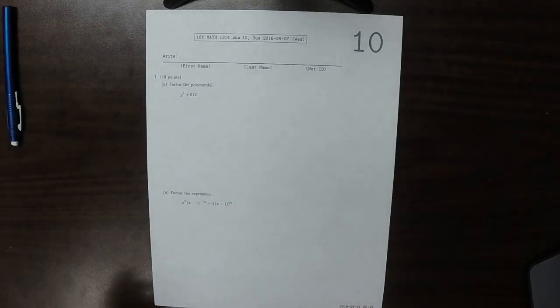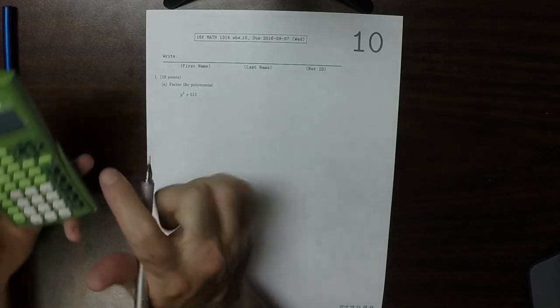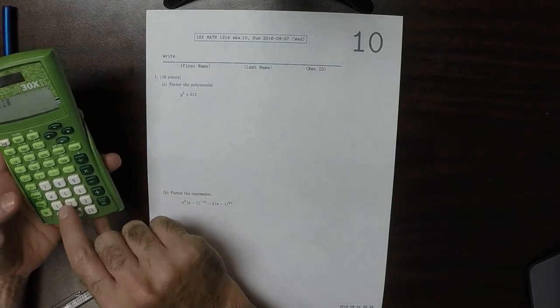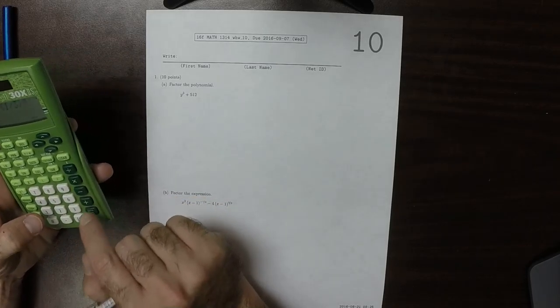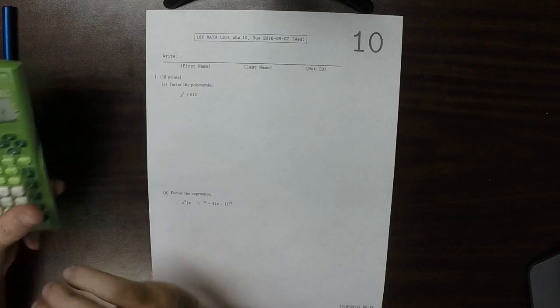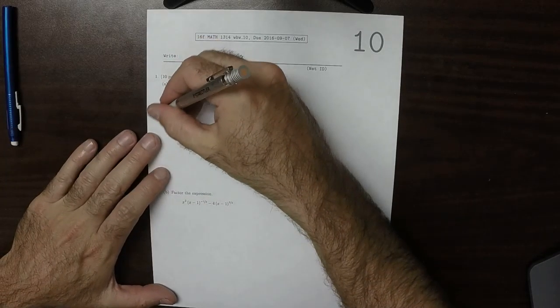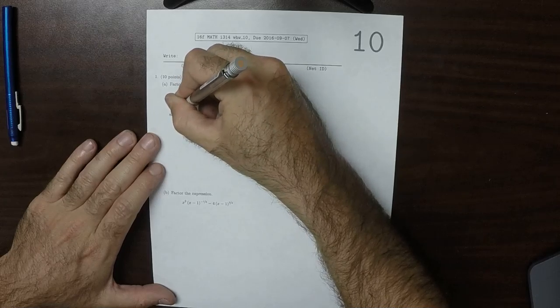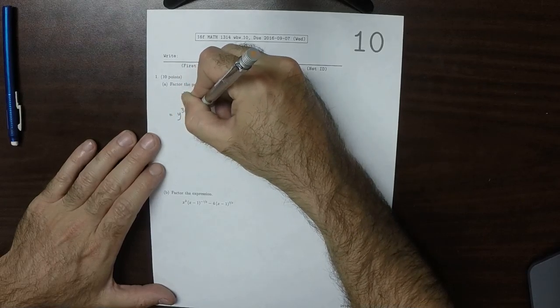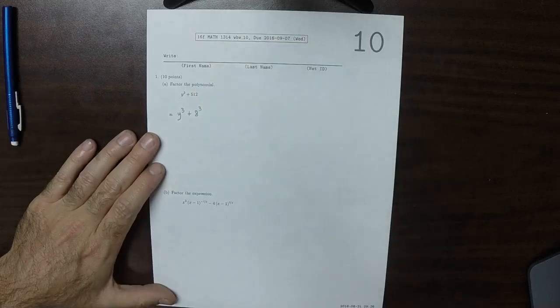What's the cube root of 512? The cube root of 512 is 8. So this is y³ plus 8³, the sum of cubes.